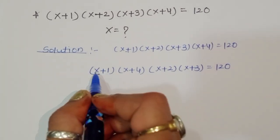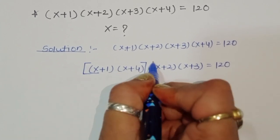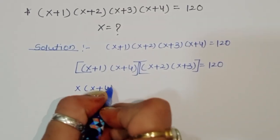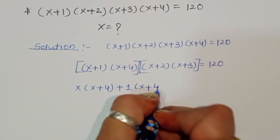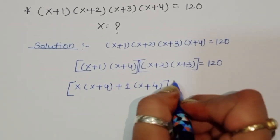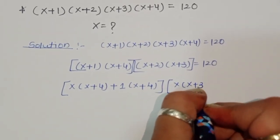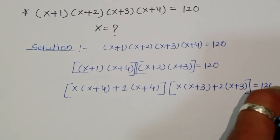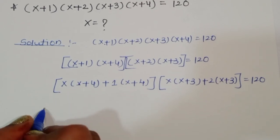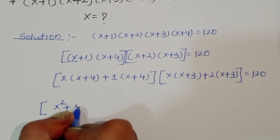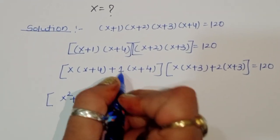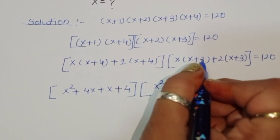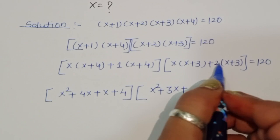Now we multiply the pairs. First: (x+1)(x+4) = x² + 4x + x + 4. Second: (x+2)(x+3) = x² + 3x + 2x + 6.